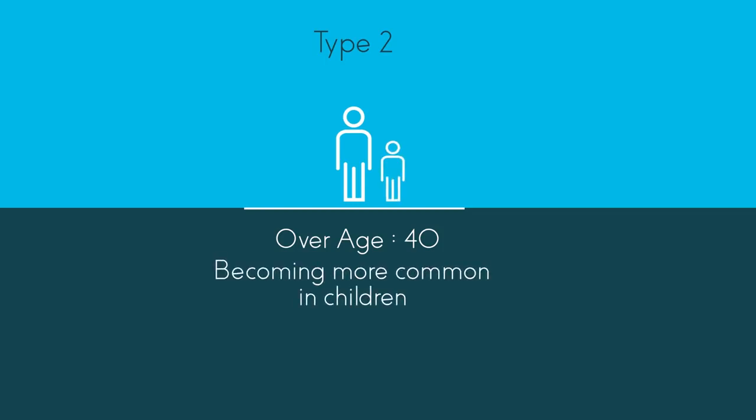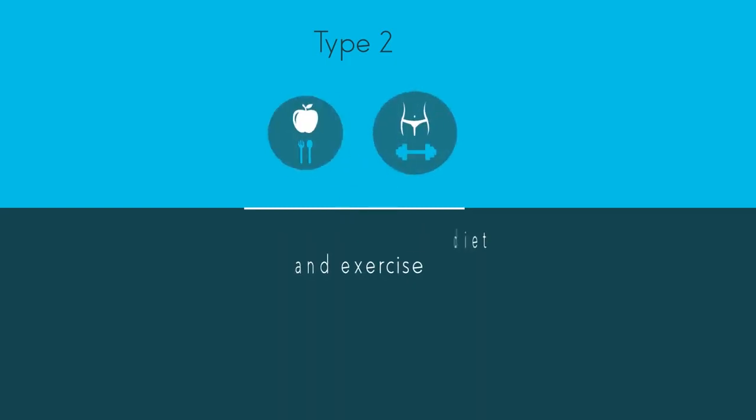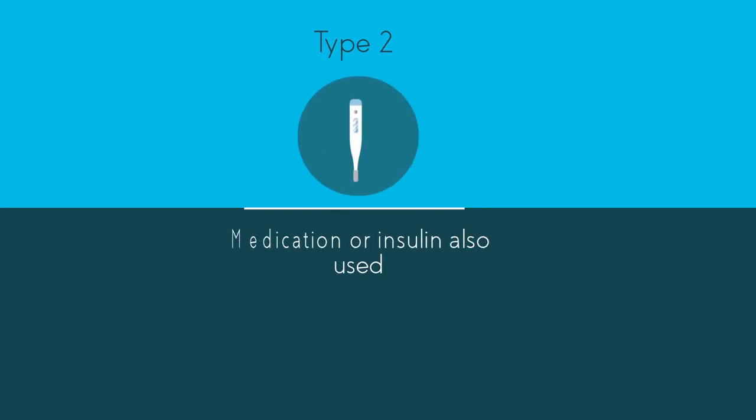Type 2 diabetes usually appears in people over the age of 40, but it is becoming more common in children and younger people. It accounts for between 85 and 95 percent of all diabetes, and is treated with a healthy diet and regular exercise. Medication and or insulin are also often used.